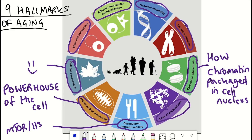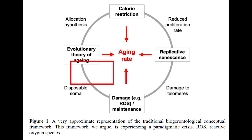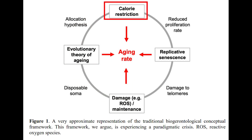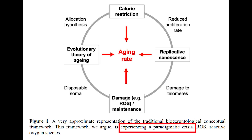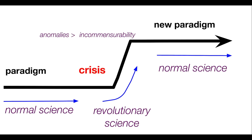It's worth mentioning that these hallmarks of ageing were built upon some of the previous hypotheses to explain the ageing process. Over time there was accumulating evidence to support the function of replicative senescence, damage through reactive oxygen species, evolutionary theories, and through fasting. The authors of this critique paper describe these early hypotheses as experiencing a paradigmatic crisis, referring to the crisis stage in Thomas Kuhn's paradigm theory — the stage whereby accumulating evidence no longer fits with the current paradigm such that a new paradigm needed to be built upon or modified.